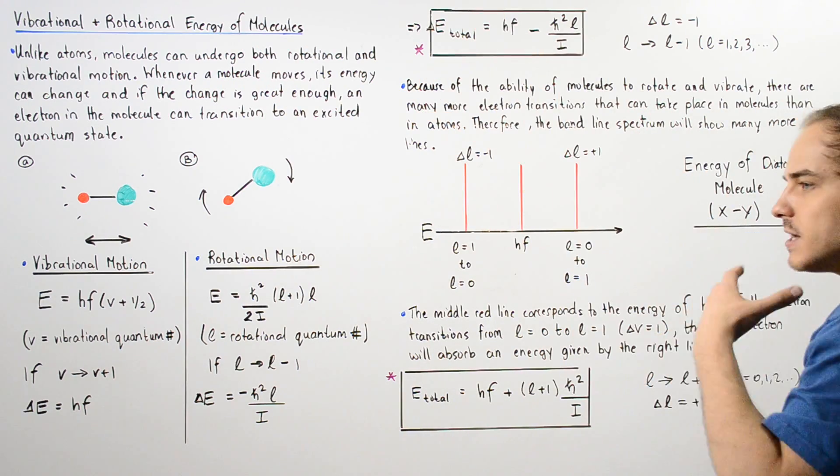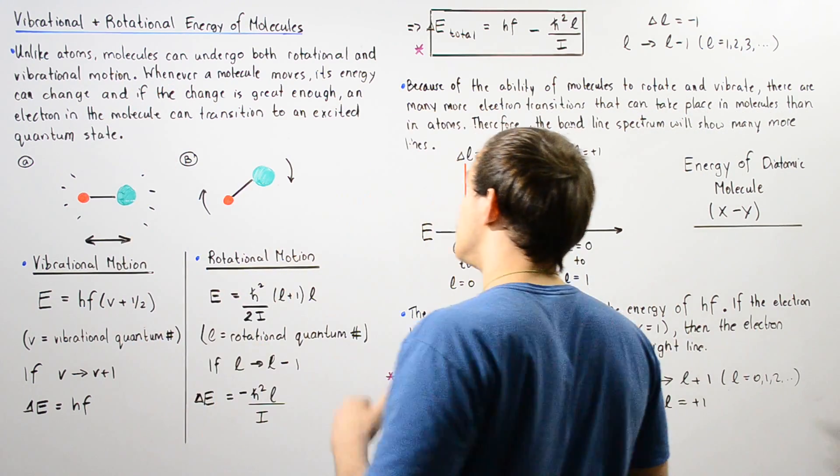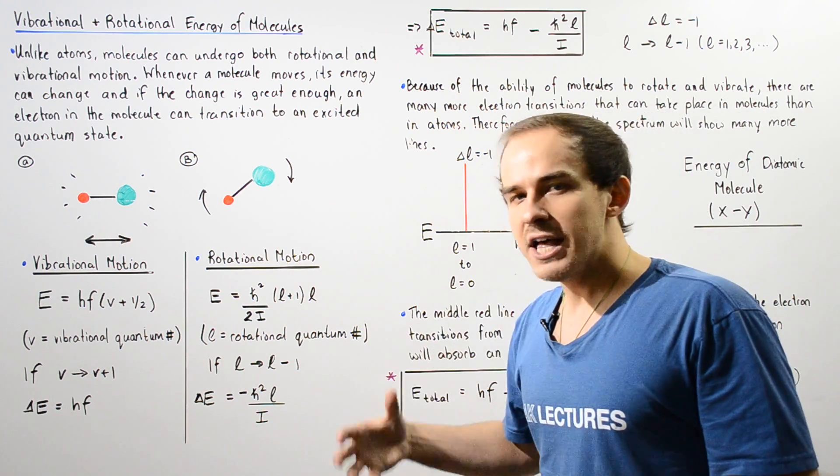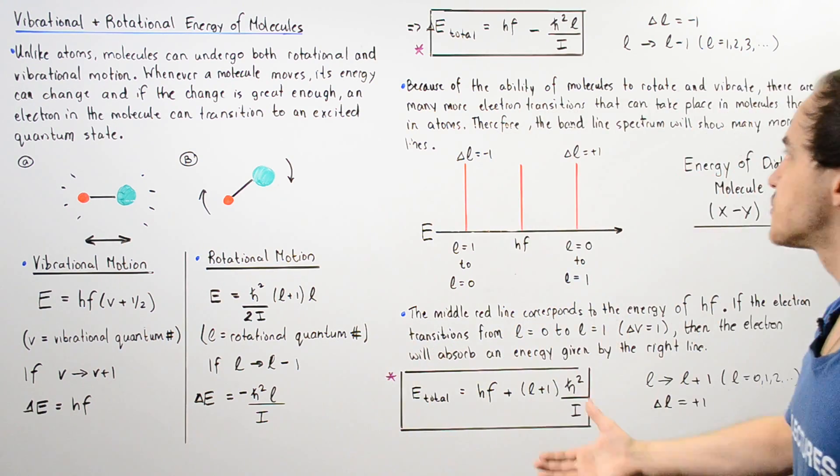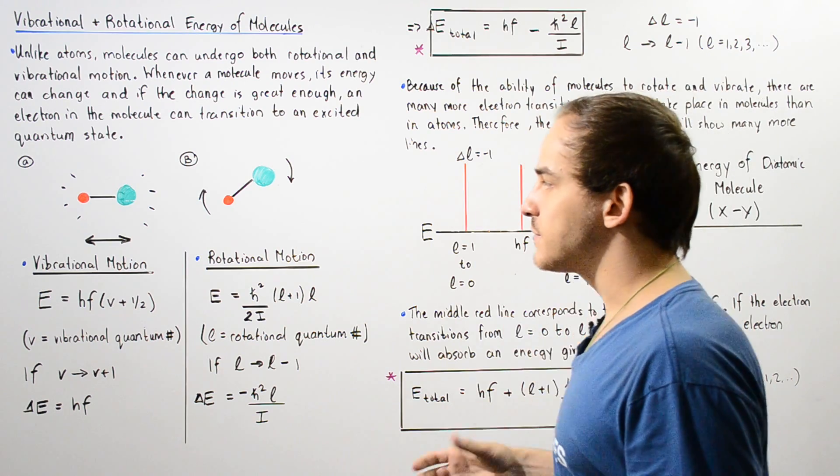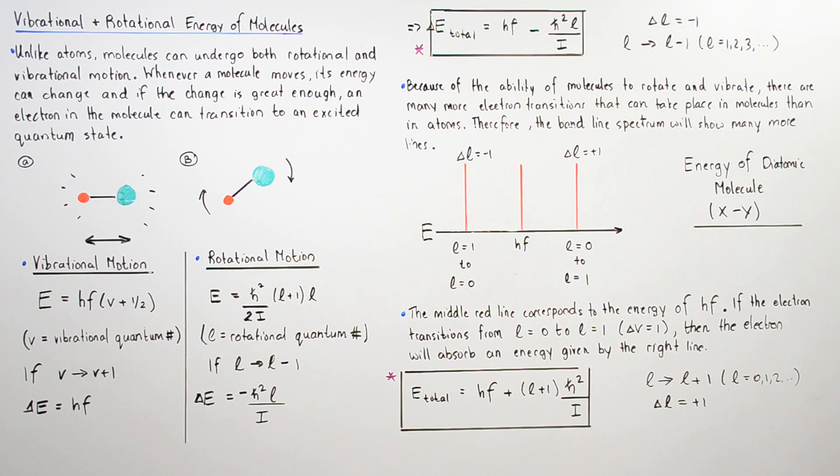Now, because of this ability of molecules to experience vibrational and rotational motion, there are many more electron transitions that can actually occur in molecules as compared to their individual atoms. Therefore, the band line spectrum will show many more lines for the molecules than for our individual constituent atoms.